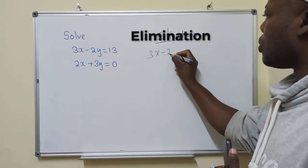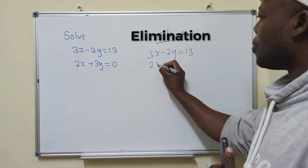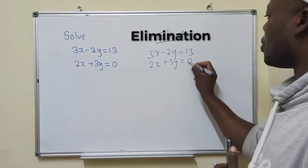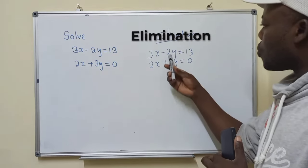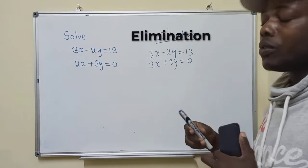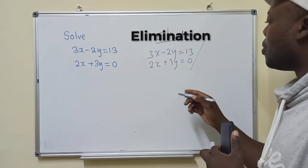This is 3x minus 2y equals 13, and then we have 2x plus 3y equals 0. So the first thing will be to cancel what is here and here. We need to cancel the y values. How do we cancel the y values? We do this.